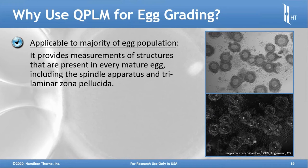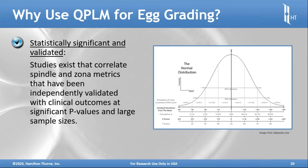The only mammalian eggs where this technique becomes harder to apply are those with a lot of lipids in their cytoplasm — not quite clear enough, and the lipids attenuate the light. But certainly with bovine, murine, and human oocytes, this technique is very applicable. Studies correlating spindle and zona metrics have been independently validated across many facilities and generated statistics with significant p-values.